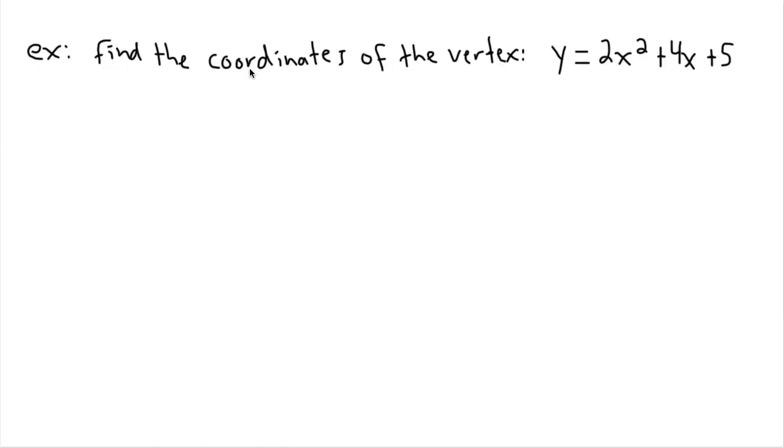So this one, find the coordinates of the vertex of this. So the first step then is going to be to actually complete the square. That's going to be the goal of this. We're going to complete the square, get to vertex form, and then we can find the vertex. The vertex should be easy.